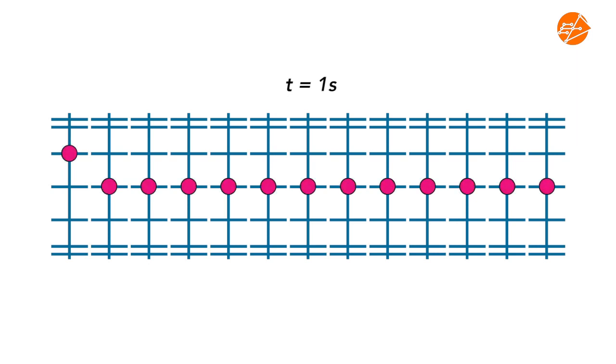Forces of attraction hold these particles together and allow energy transfer through the transverse wave. The second particle is disturbed by the first particle due to the bonding that links them and moves to the next position during t = 1 second to t = 2 seconds.